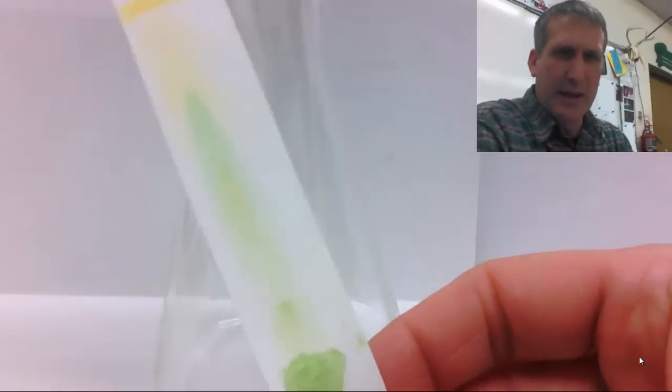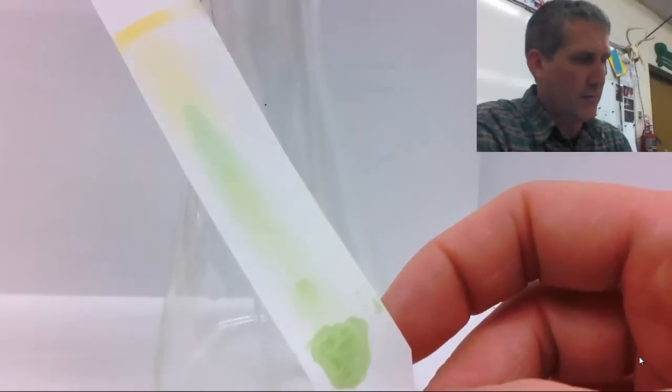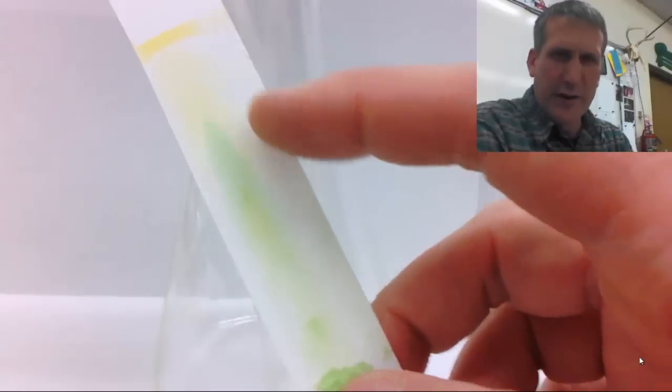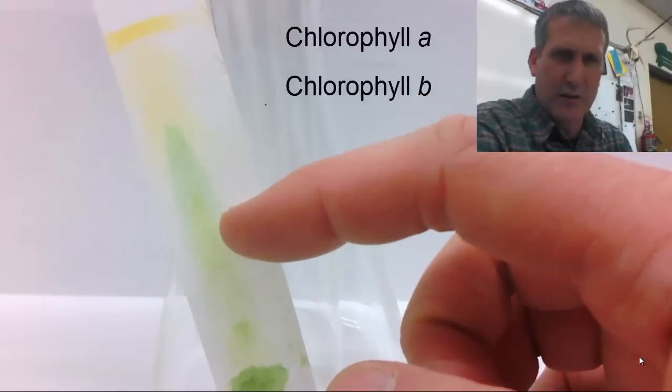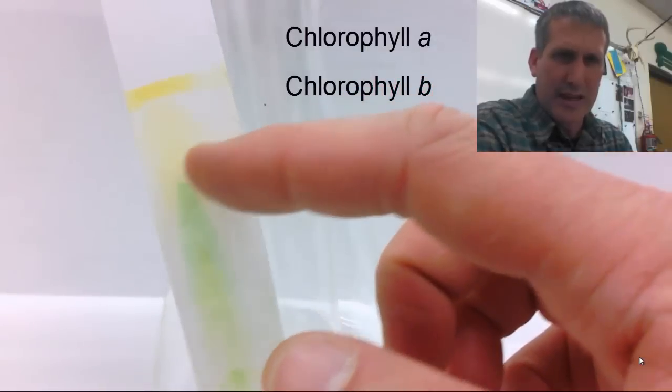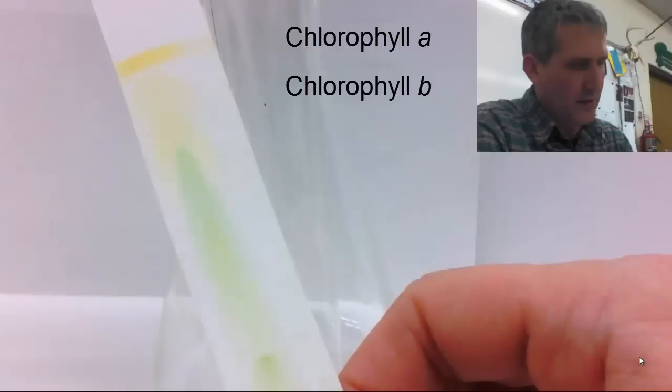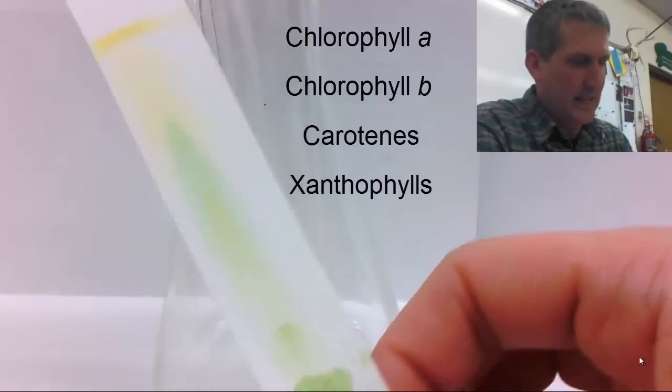Once you've removed it the pigments will stop moving and you'll be able to analyze your chromatography paper to see the different pigments. I don't know if you can see it in the video but there are at least two different colored greens here which is chlorophyll A and chlorophyll B. There's also some yellow and some orangey colors which are carotenes and xanthophylls.